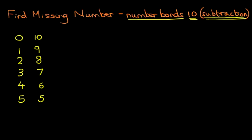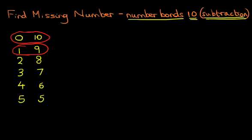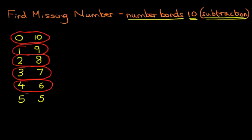Now, what do you notice about these numbers? I'm going to put a circle around each one. Okay, 0 and 10 makes 10. 1 and 9 makes 10. So each of these sets of numbers all equal 10. 3 and 7 equals 10, 4 and 6 equals 10, 5 plus 5 equals 10. So they all equal 10 — that's addition. However, we can still use these if we are looking at subtraction questions.